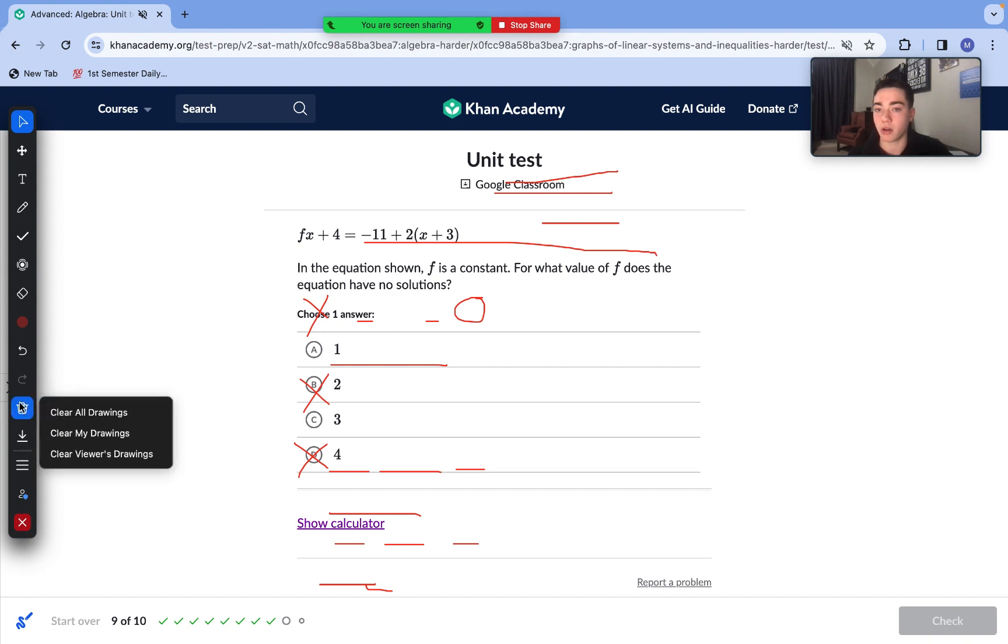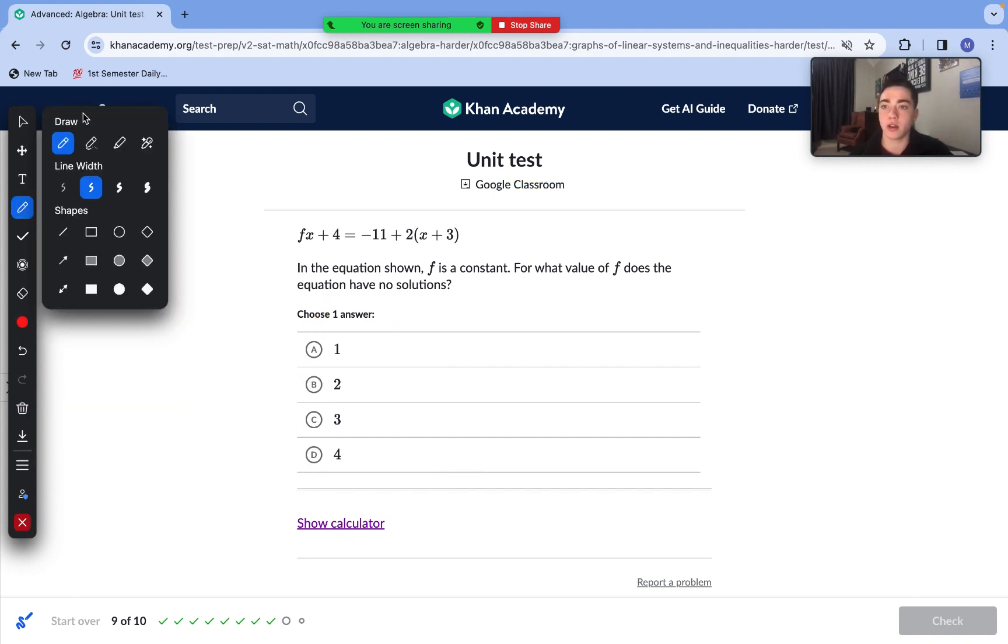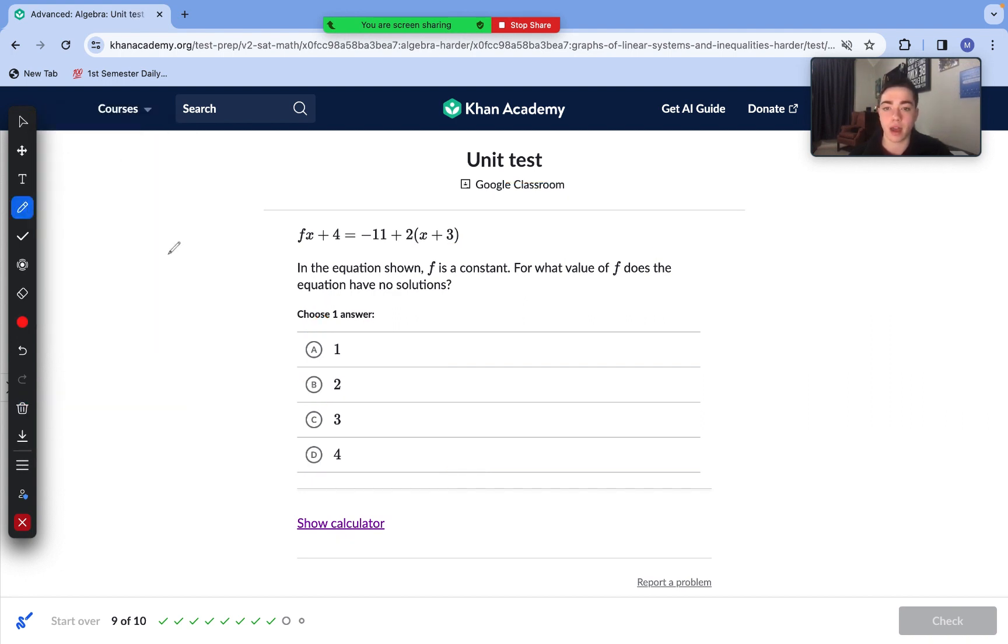Moving to question number nine. In this equation, F is a constant. For what value of F does the equation have no solutions? Of course, we know that no solutions is when the coefficients to our variables is the same, but our constants are unequal, meaning that the equation has no solution, which makes it correct. Of course, we see on our right side, 2 is going to be the coefficient to our x. So on our left side, 2 has to be the coefficient to our x in order to cancel out those variables. So B is the only correct answer.